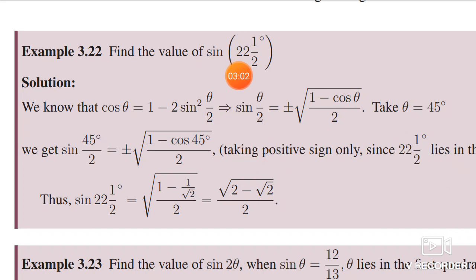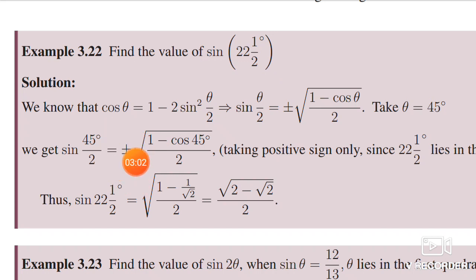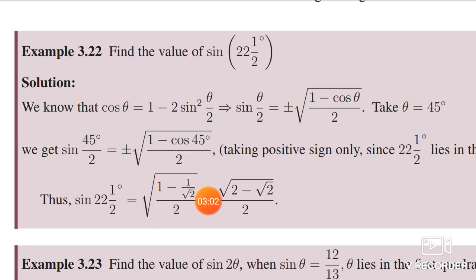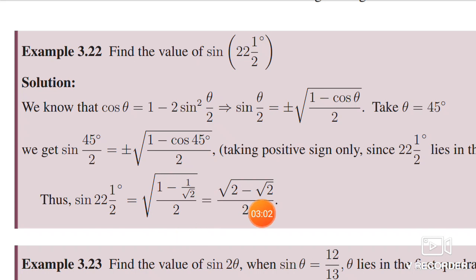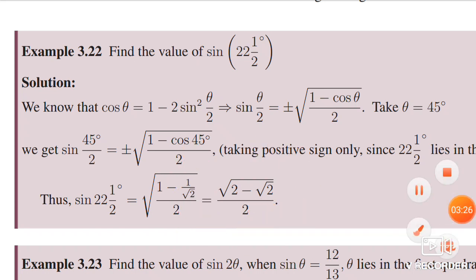Sin 22 and a half degrees lies in the first quadrant. Therefore it should be positive. Since we are in the first quadrant, we consider the positive value. So we take the positive root of 1 minus cos 45 — the value cos 45 is 1 by root 2 — divided by 2. Simplifying this, we will get the answer.